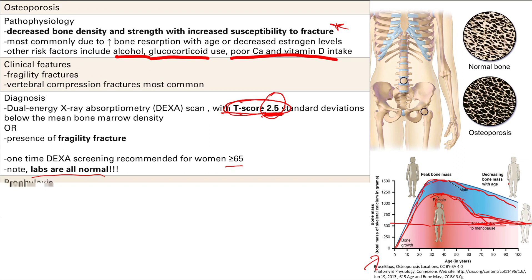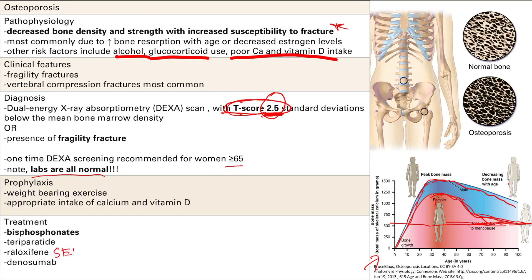Next is teriparatide, which is a PTH analog. Remember that PTH can be anabolic when given with intermittent pulses, so teriparatide is given in pulsatile fashion to stimulate increased bone building. Next is raloxifene, a selective estrogen receptor modulator — it acts as an estrogen analog at specific parts of the body, including bone, and remember that estrogen helps build bone.